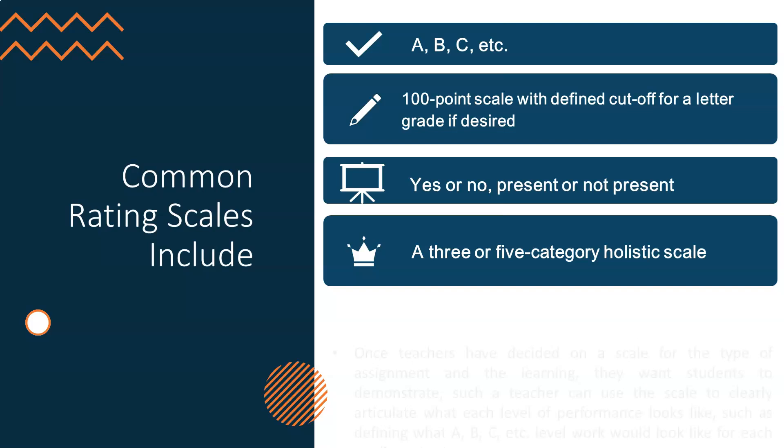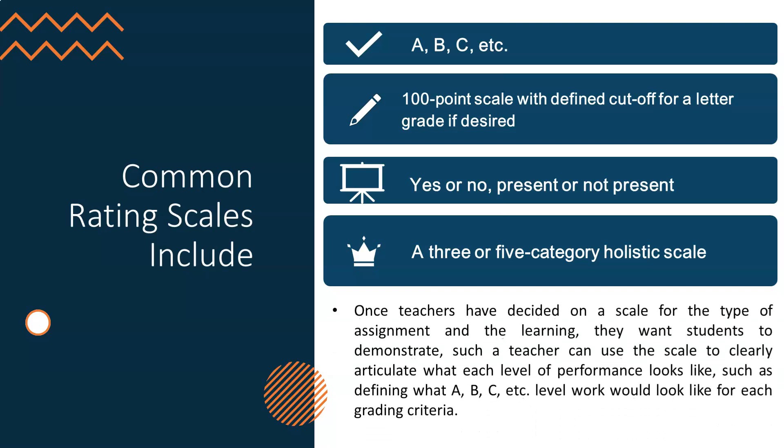Once the teacher has decided on a scale for the type of assignment and the learning she or he wants students to demonstrate, the teacher can use the scale to clearly articulate what each level of performance looks like — such as defining what A, B, C level work would look like for each grading criterion. What would distinguish a student who earns a B from one who earns a C? What would distinguish a student who excelled in demonstrating the use of a tool from a student who clearly was not familiar with it? These distinctions have to be written out in descriptive notes or brief paragraphs.